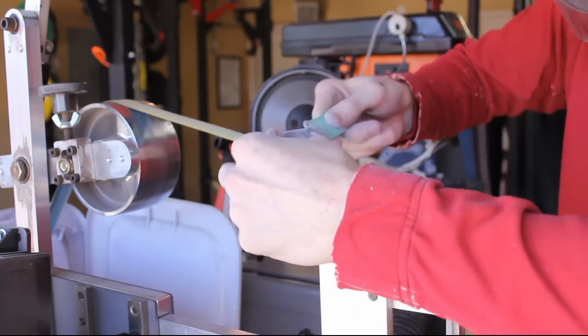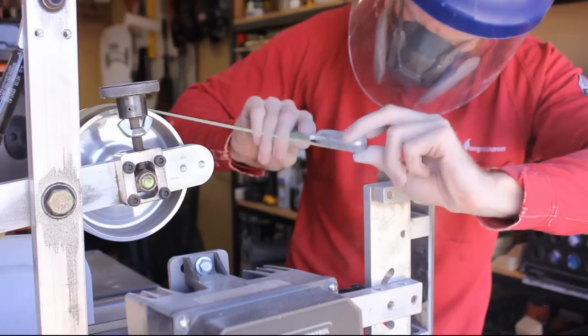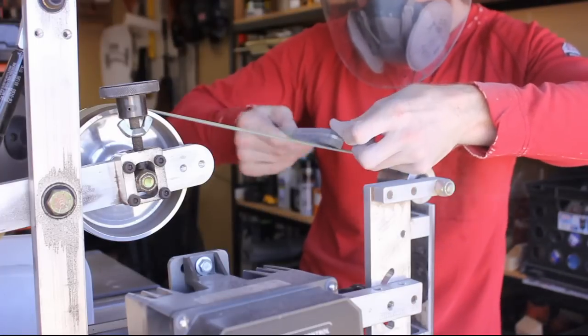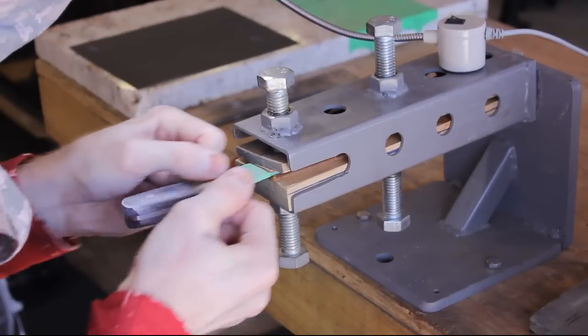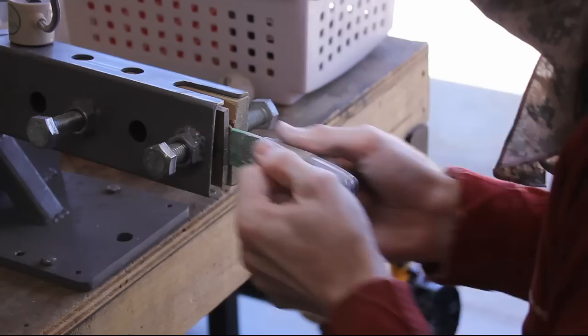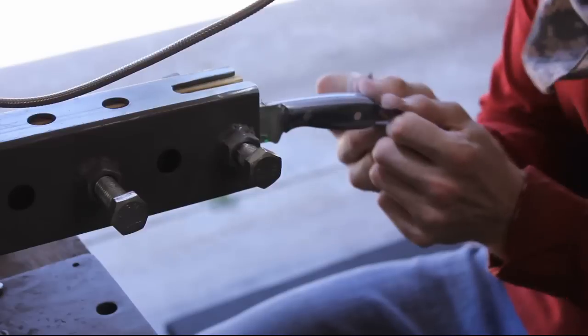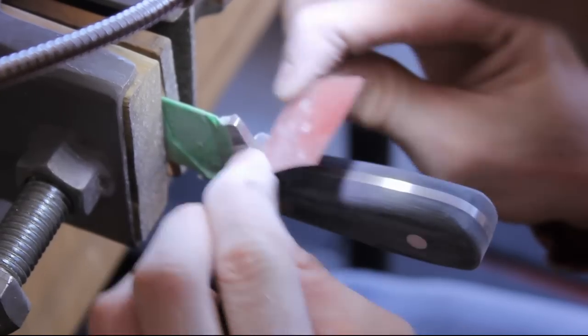Then I'll do my initial handle shaping on the belt sander using these one inch scalloped belts. These are great, they don't gouge when you're getting into corners and radiuses so I've really been liking those lately. And then I moved on to the hand sanding on the handle. I brought the whole handle up to a 600 grit finish. I started with a 320 and then eventually up to a 600 grit finish on the ebony scales here.